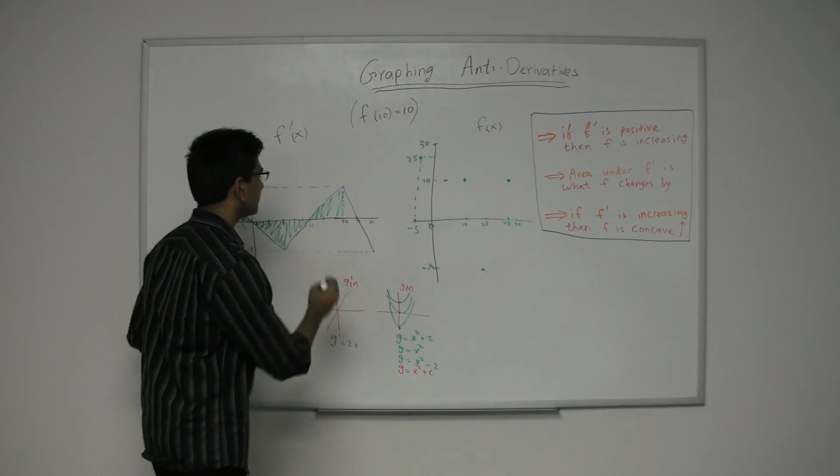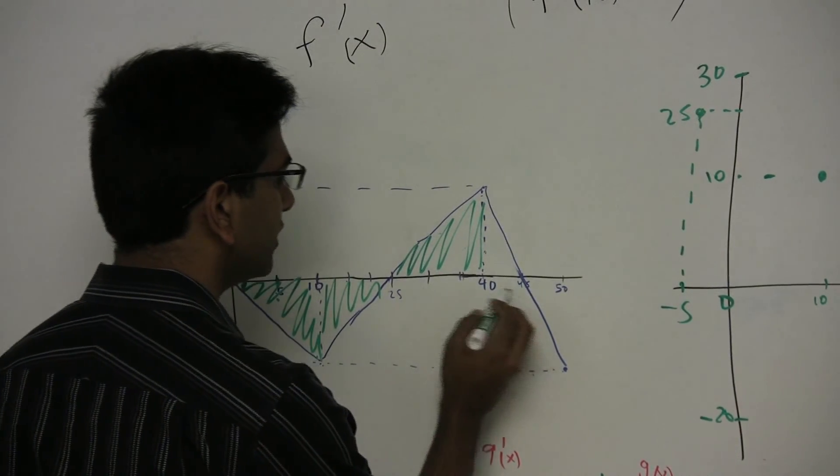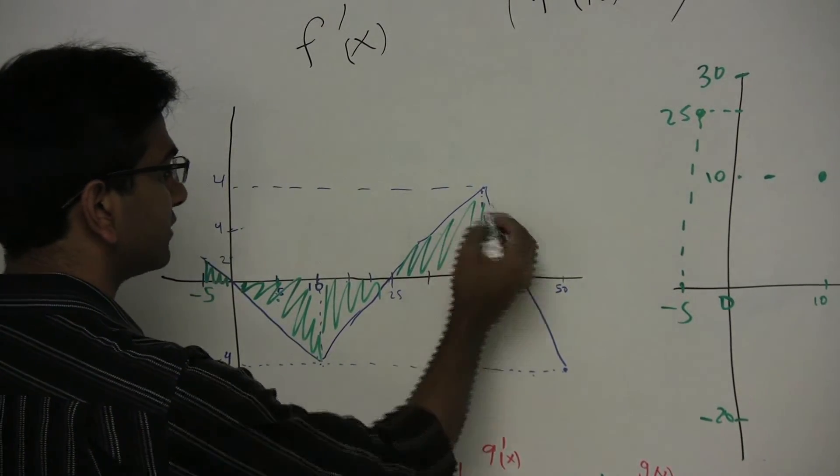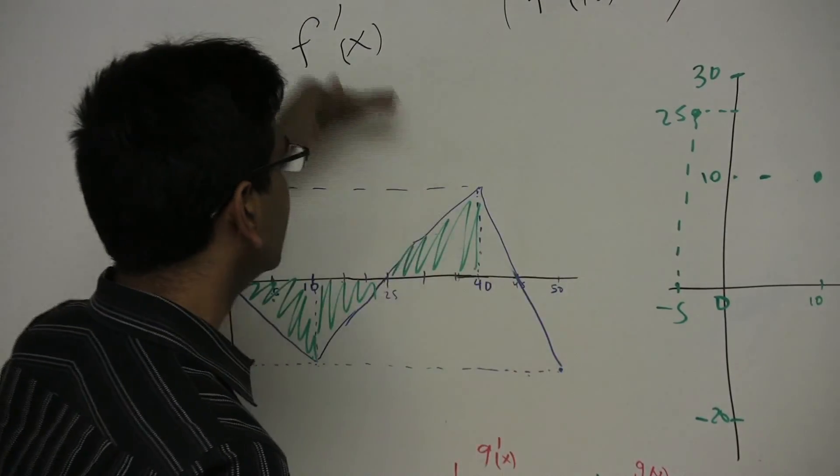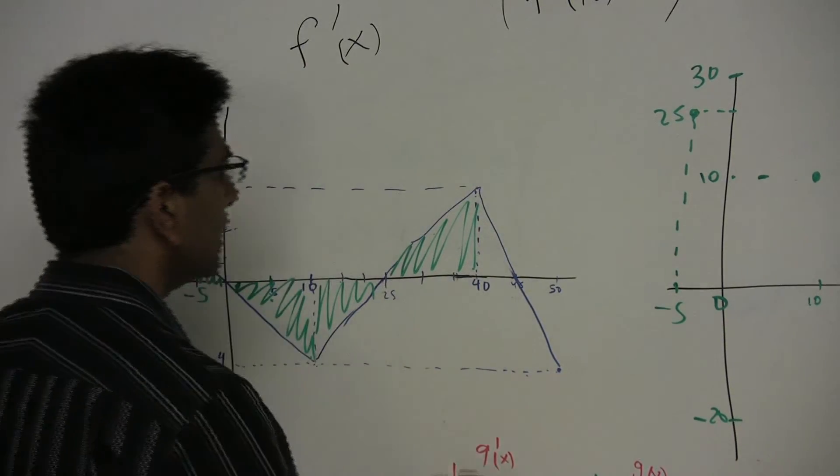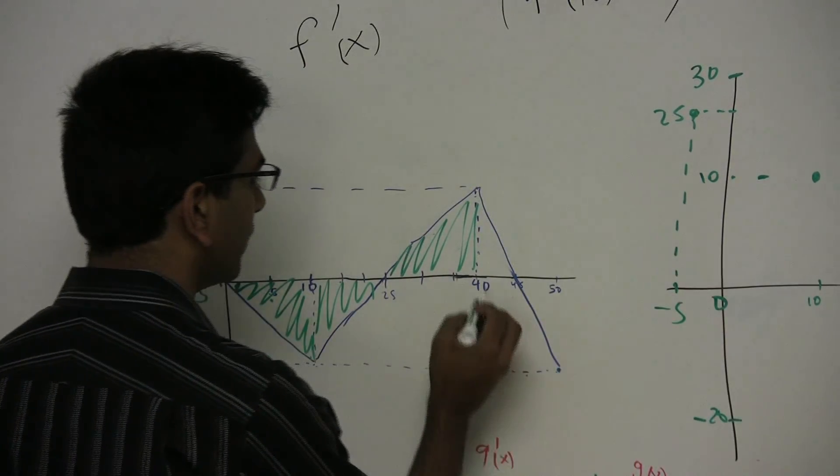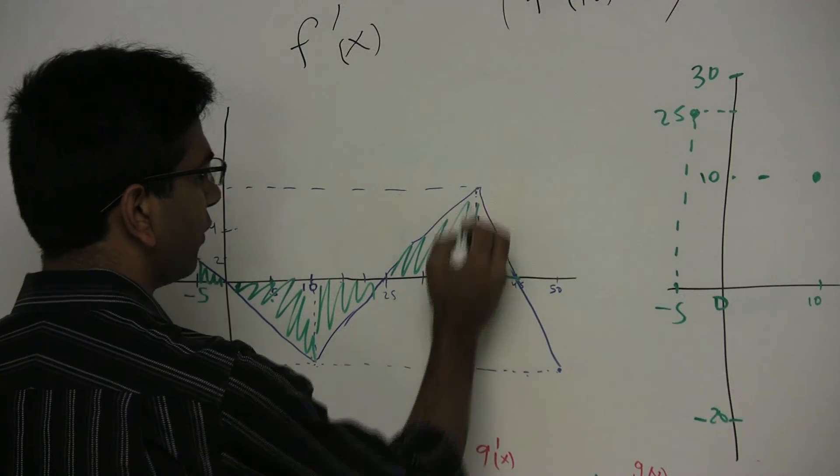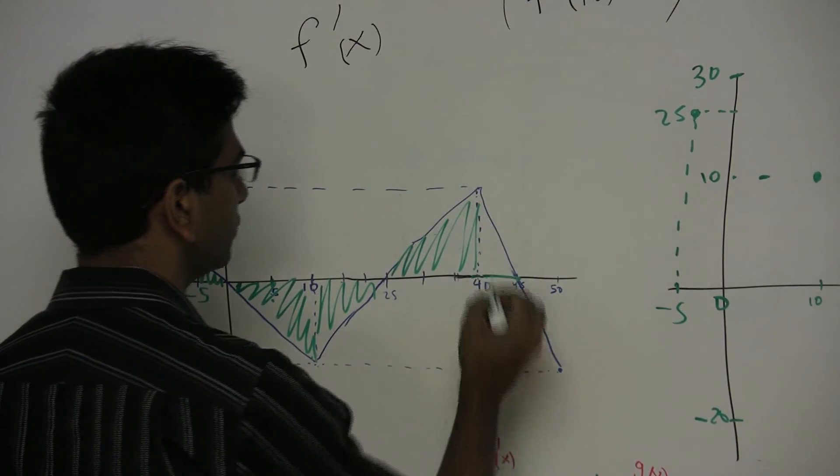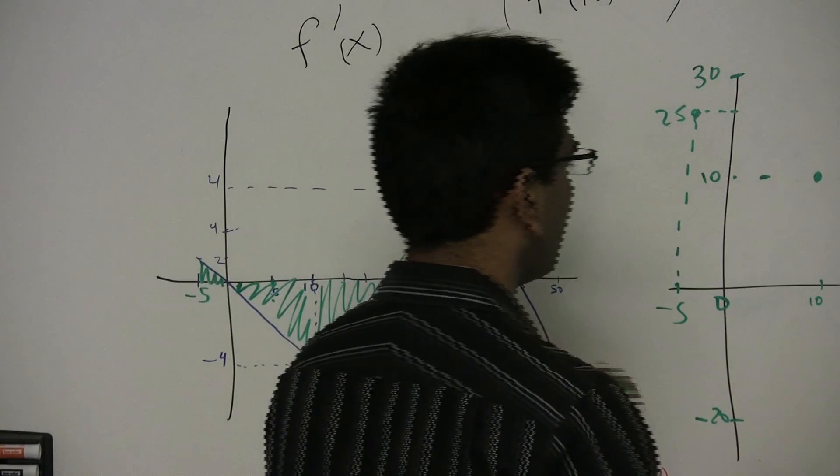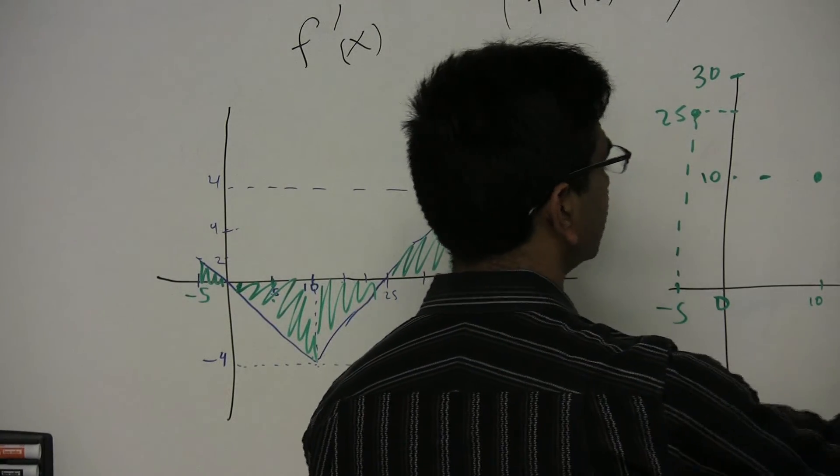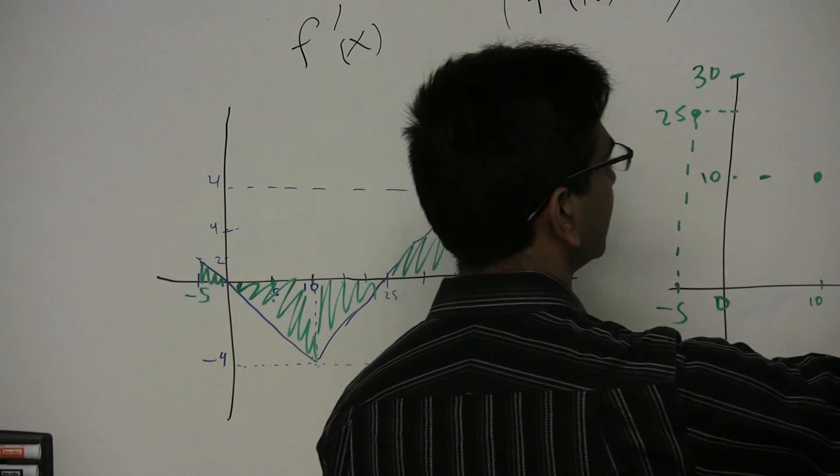Now finally, between 40 and 45, we see that the area over here, we know that f is increasing because f prime is positive. But how much will it increase by? Well, 5 times 4, divided by 2, which is 10. So it will go up by 10 units, up from 10 to 20.